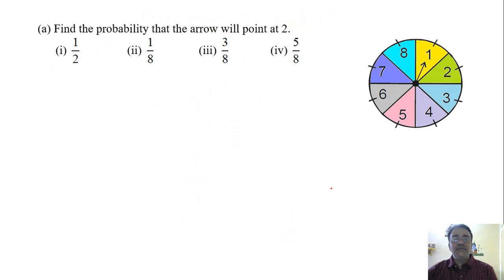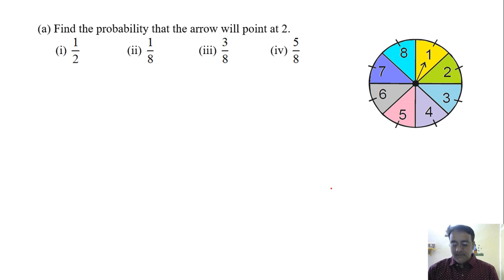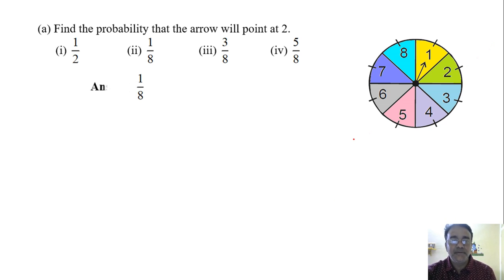First question: find the probability that the arrow will point at 2. What is the probability? 1 by 8. Very good. So the correct answer is 1 by 8.